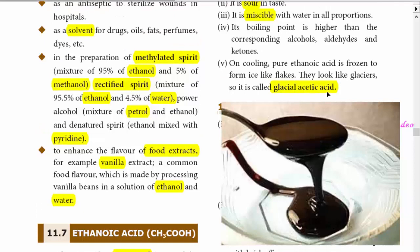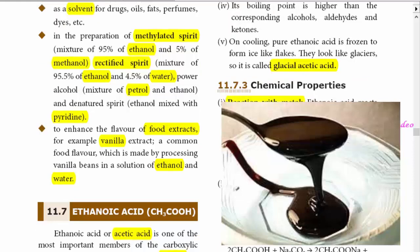Coming to the chemical properties of ethanoic acid: ethanoic acid reacts with metals like sodium, zinc, etc., to liberate hydrogen and form its ethanoates. When it reacts with sodium, it forms sodium acetate and liberates hydrogen. When it reacts with zinc, it forms zinc acetate and liberates hydrogen.